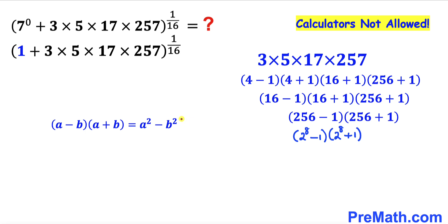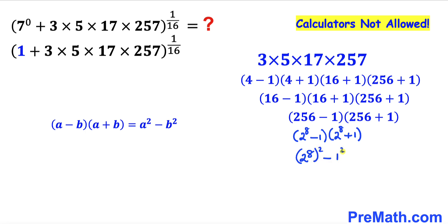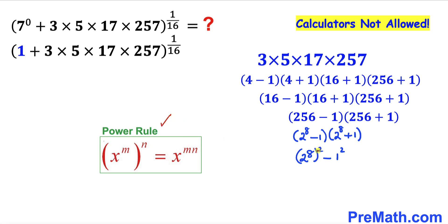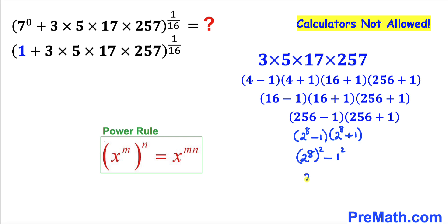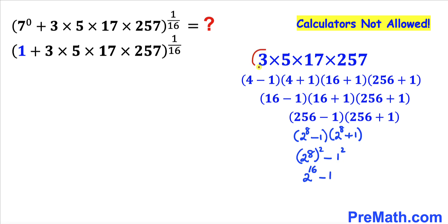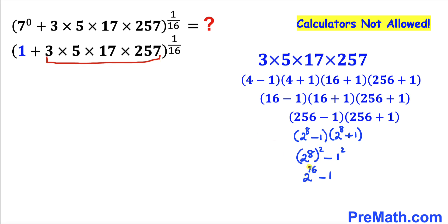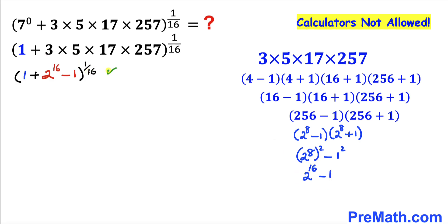Let's apply this identity once more, calling (2^8 − 1) and (2^8 + 1) as (a−b) and (a+b). This gives us (2^8) squared minus 1 squared. Applying the power rule of exponents, we multiply the exponents: 8 times 2 gives 2 to the power 16, and 1 squared is 1. So all these numbers simplify to 2^16 minus 1, and I have replaced the entire expression by 2^16 minus 1.